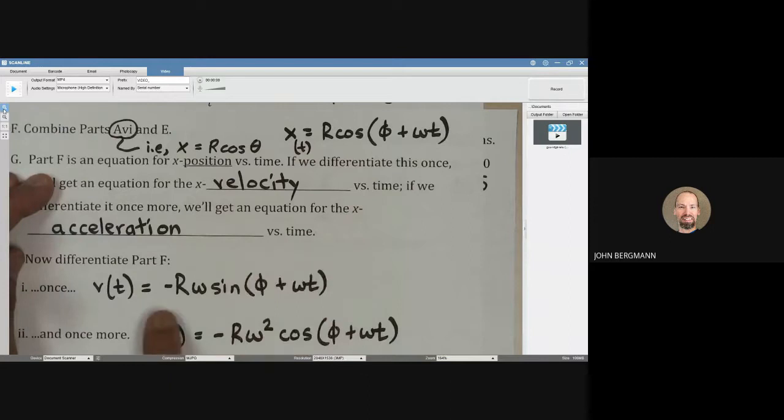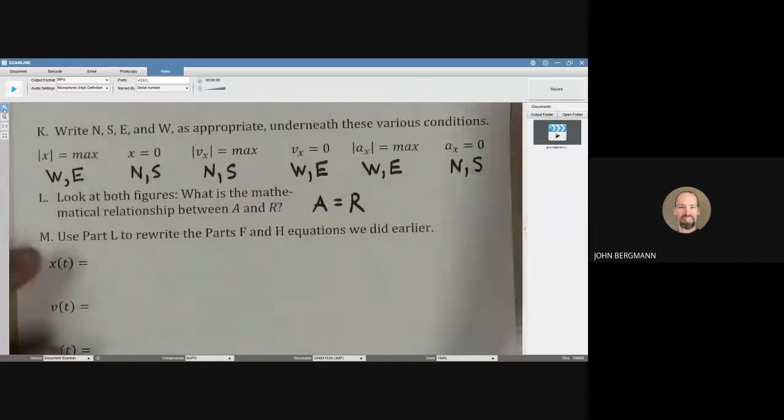We differentiated that once to get this expression, negative R omega sine of phi plus omega t, and then we differentiated it a second time. So we're going to just rewrite these equations, but we're going to put A in here instead of R.